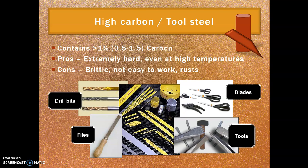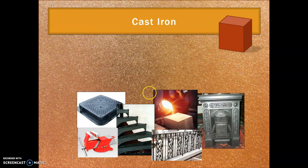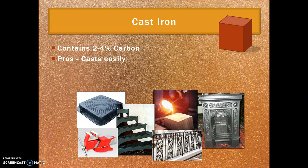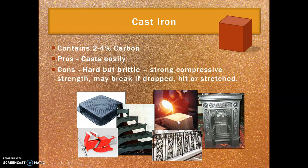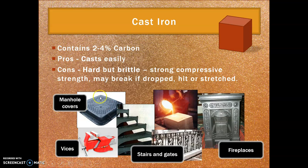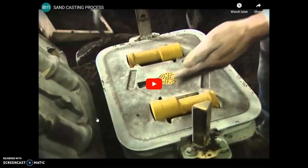Cast iron — anything that comes in a big lump is usually cast iron. It has two to four percent carbon, the highest percentage overall, and it casts really easily. However it is hard but also brittle — it has really strong compressive strength but can break if dropped, hit, or stretched. Like this manhole cover here: it can resist millions of cars driving over it, but if you bang it on the side it may well crack.